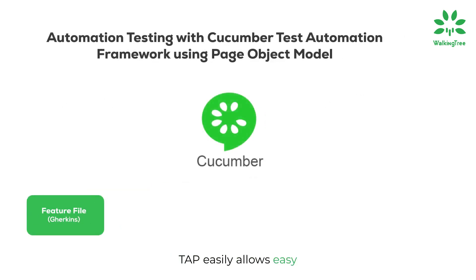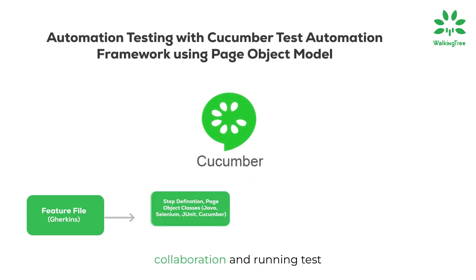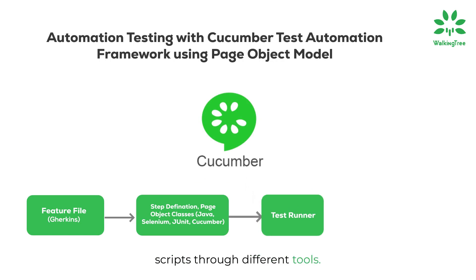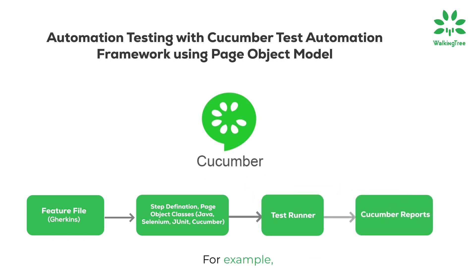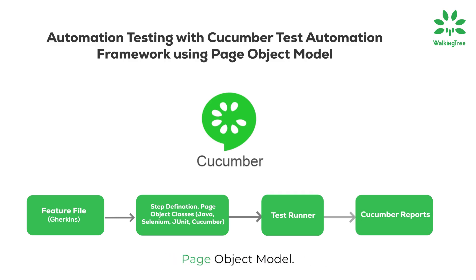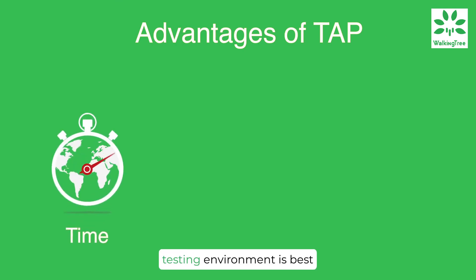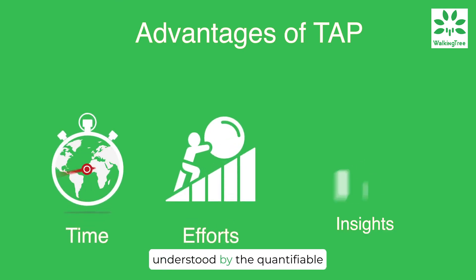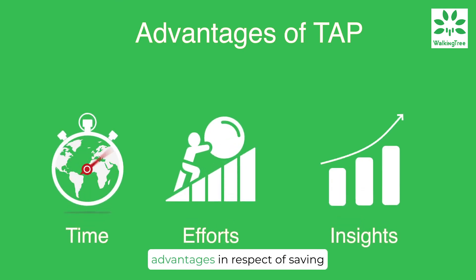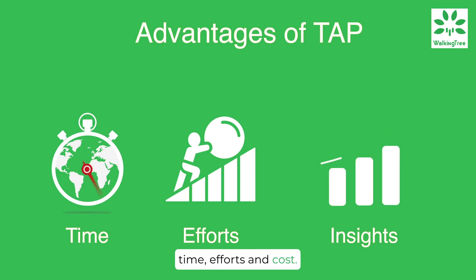TAP easily allows collaboration and running test scripts through different tools. For example, TAP allows leveraging Selenium-based frameworks like Cucumber for test automation using the page object model. The excellence of TAP in a testing environment is best understood by the quantifiable advantages in respect of saving time, efforts, and cost.